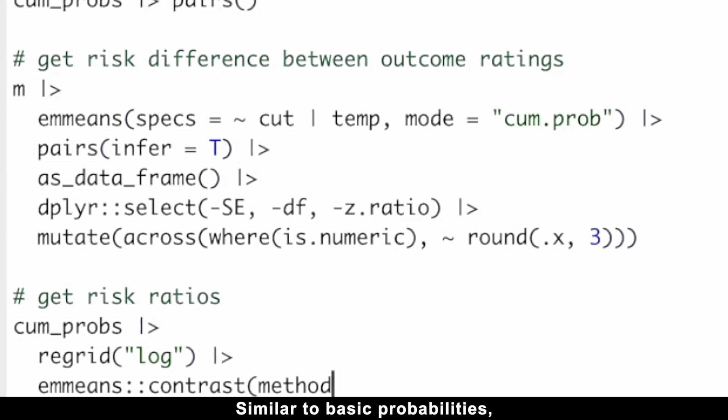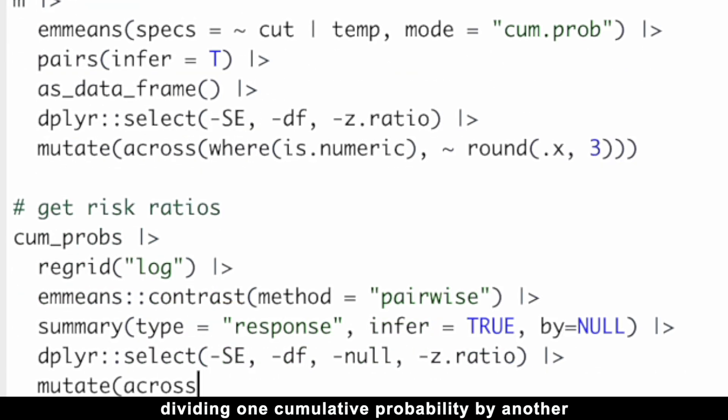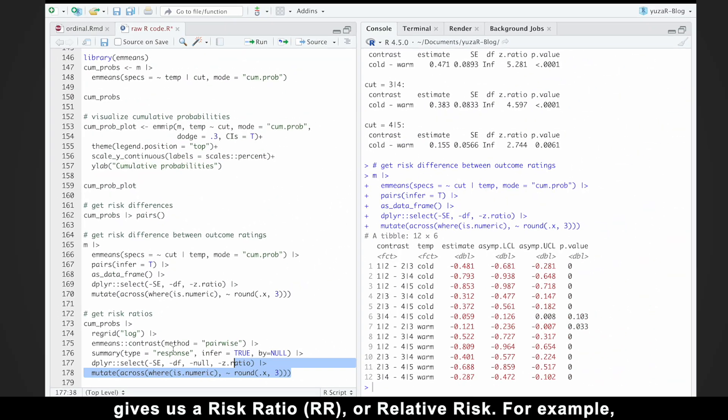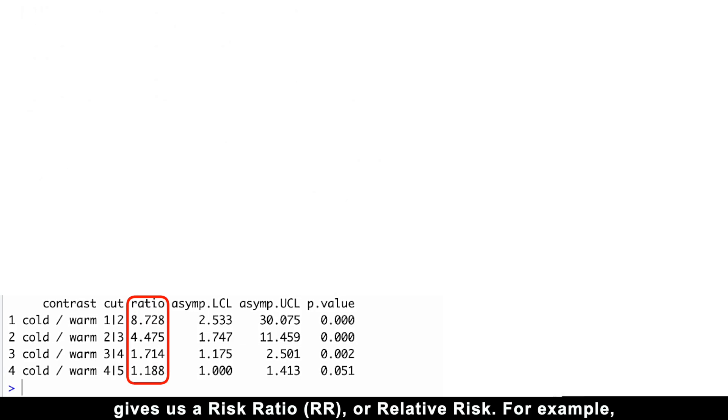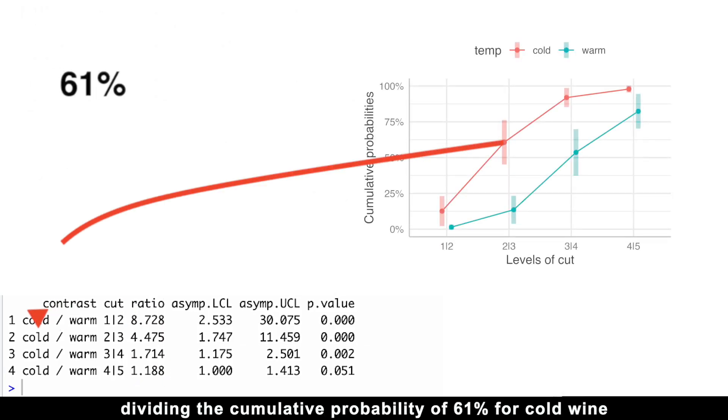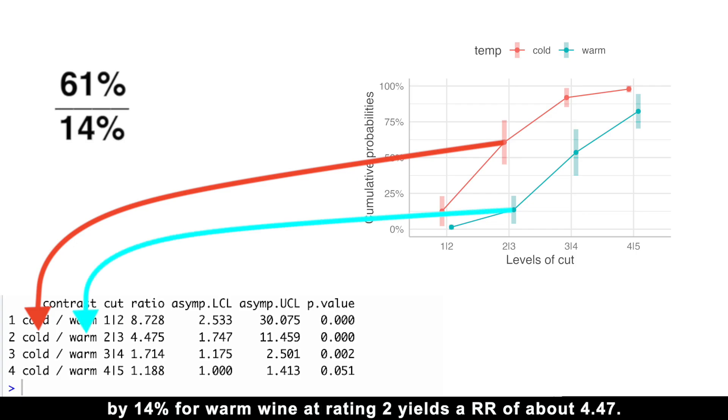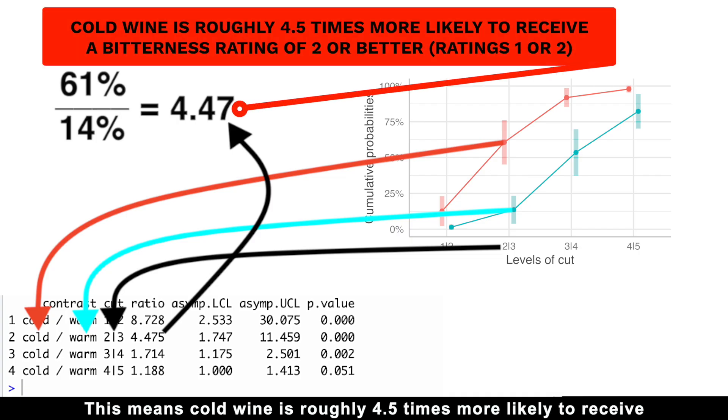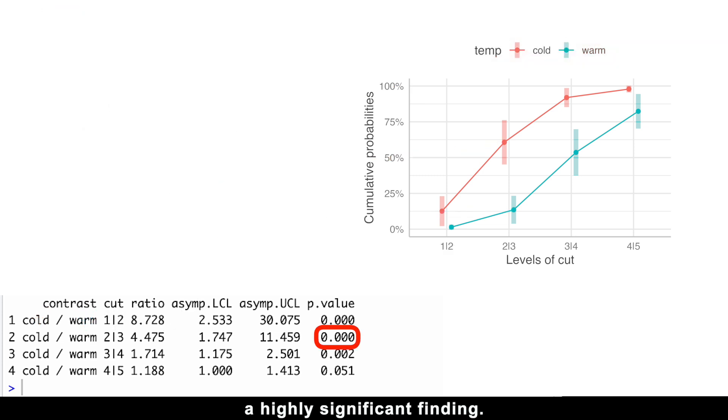Similar to basic probabilities, dividing one cumulative probability by another gives us a risk ratio or relative risk. For example, dividing the cumulative probability of 61 for cold wine by 14 for warm wine at rating 2 gives us 4.4 with 95% confidence intervals. This means cold wine is roughly 4.5 times more likely to receive a bitterness rating of 2 or better, ratings 1 or 2, a highly significant finding.